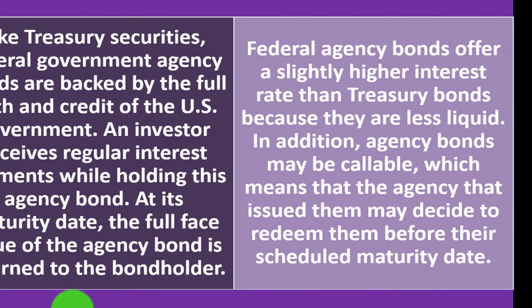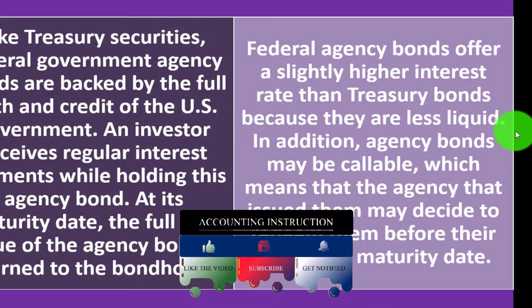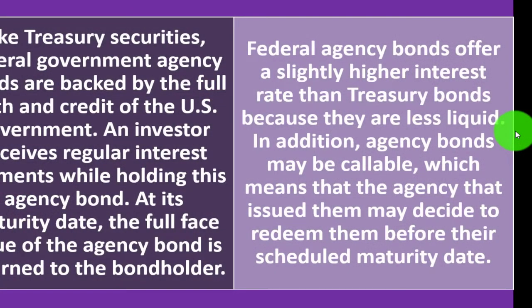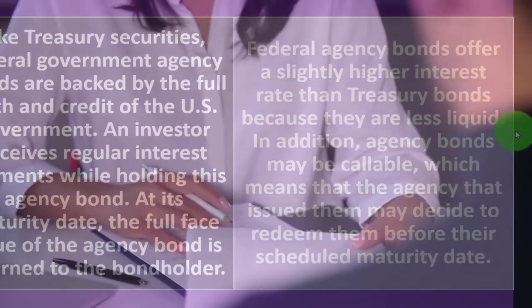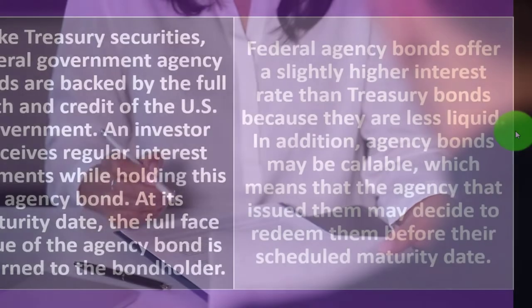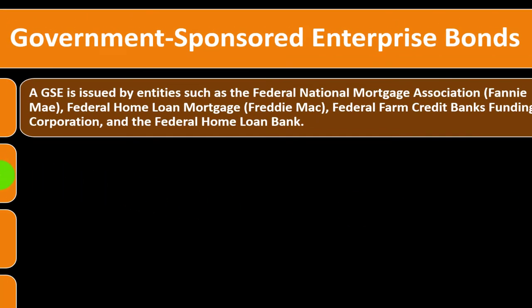Like Treasury securities, federal government agency bonds are backed by the full faith and credit of the US government. The investor receives regular interest payments while holding the bond, and at maturity the full face value is returned to the bondholder. These bonds offer a slightly higher interest rate than Treasury bonds because they are less liquid. Additionally, agency bonds may be callable, meaning the issuer may redeem them before their scheduled maturity date.